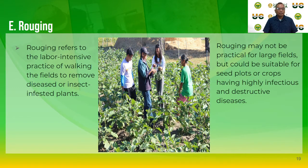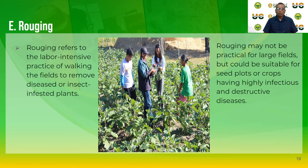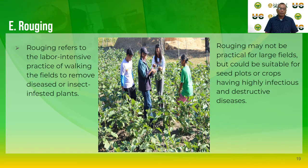Rogging refers to the labor-intensive practice of walking through the field to remove disease- or insect-infested plants. It is very important to regularly visit your crop production area to monitor for pests and determine the degree of infestation. Rogging may not be practical for large fields but could be suitable for seed plants or crops with highly infectious and destructive diseases. Removing infected plant parts helps avoid contamination or transmission to healthy plants.